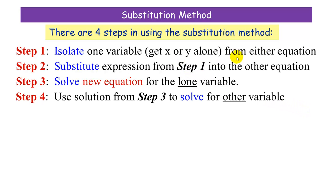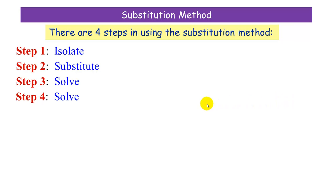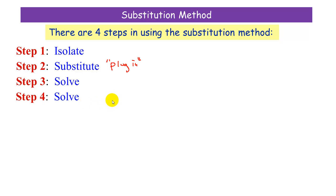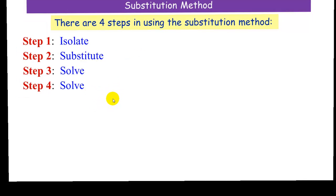To make it easier to remember these four steps, I'm going to pick out the important words: isolate, substitute, solve, and solve. Our first step is to isolate. Our second step is to substitute, or sometimes we say this is where we plug in. Then we solve for one variable, and solve for the other. Let's see how that works.